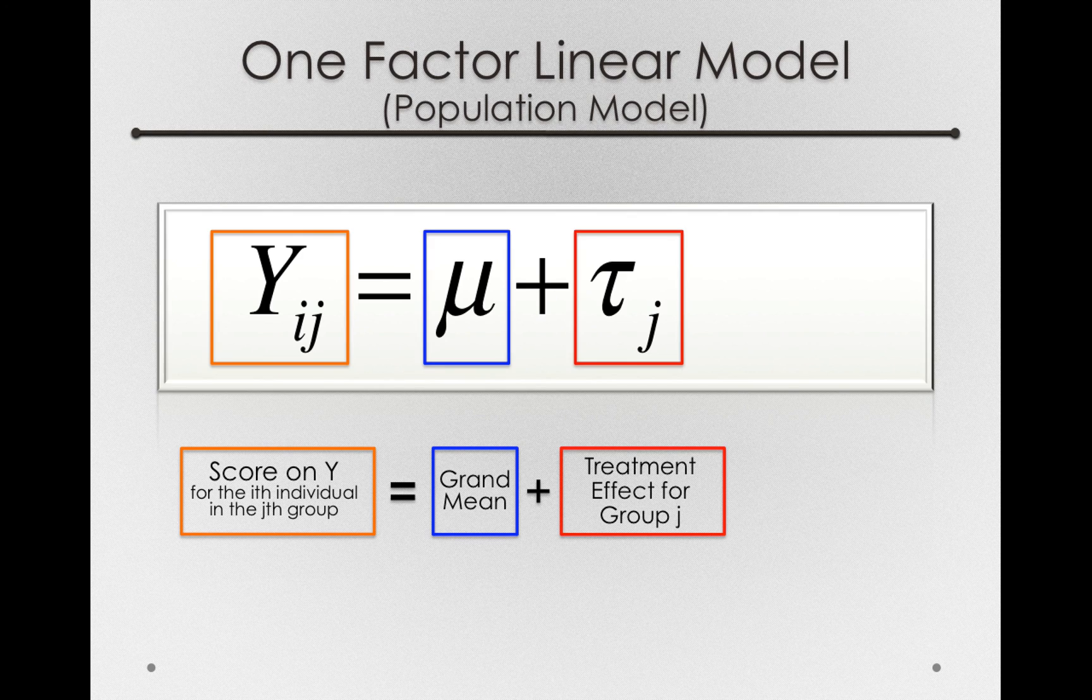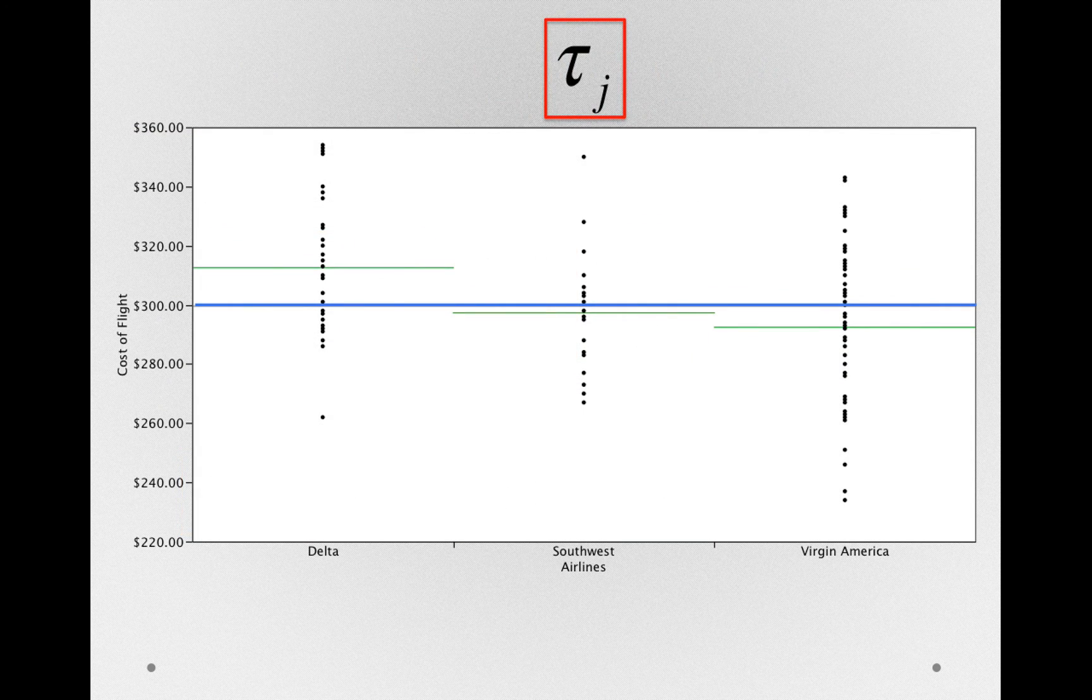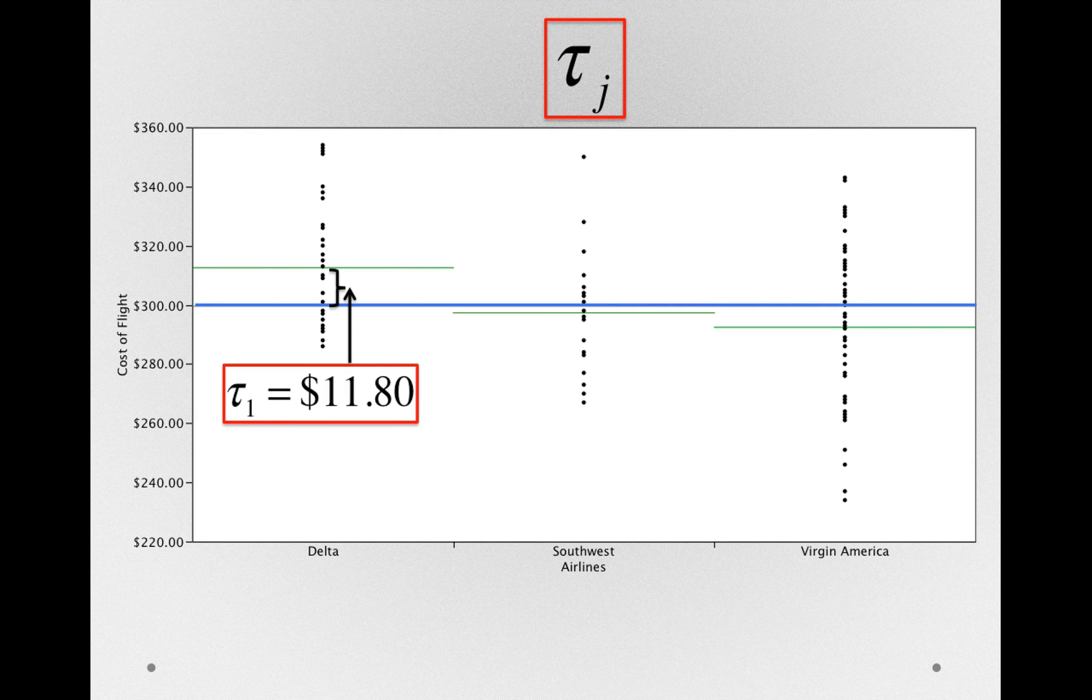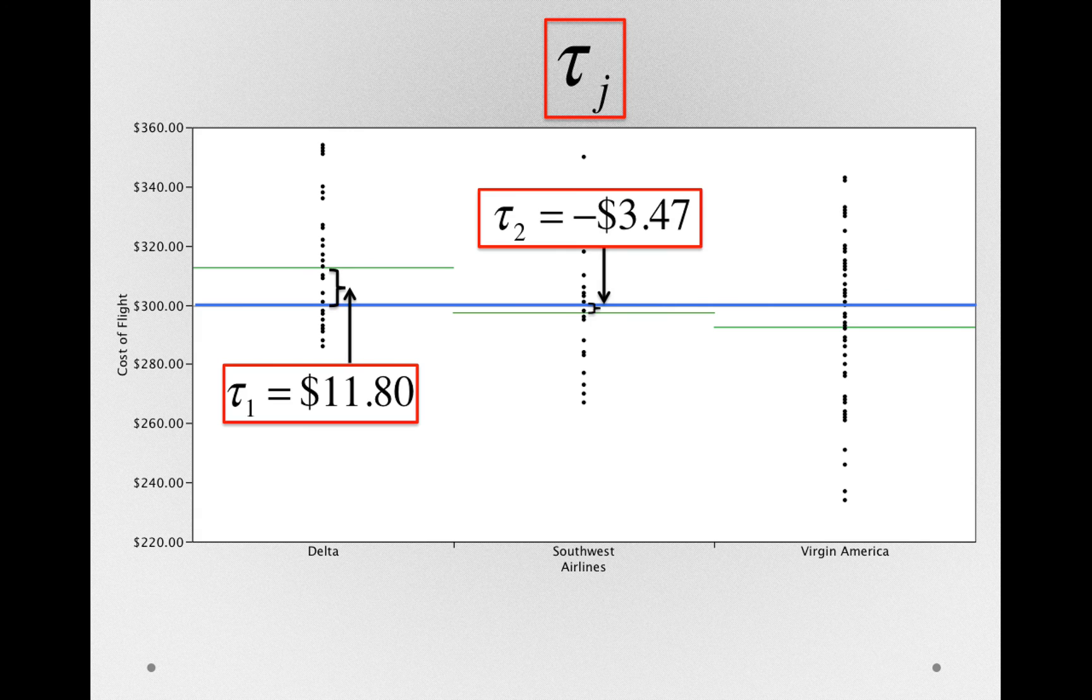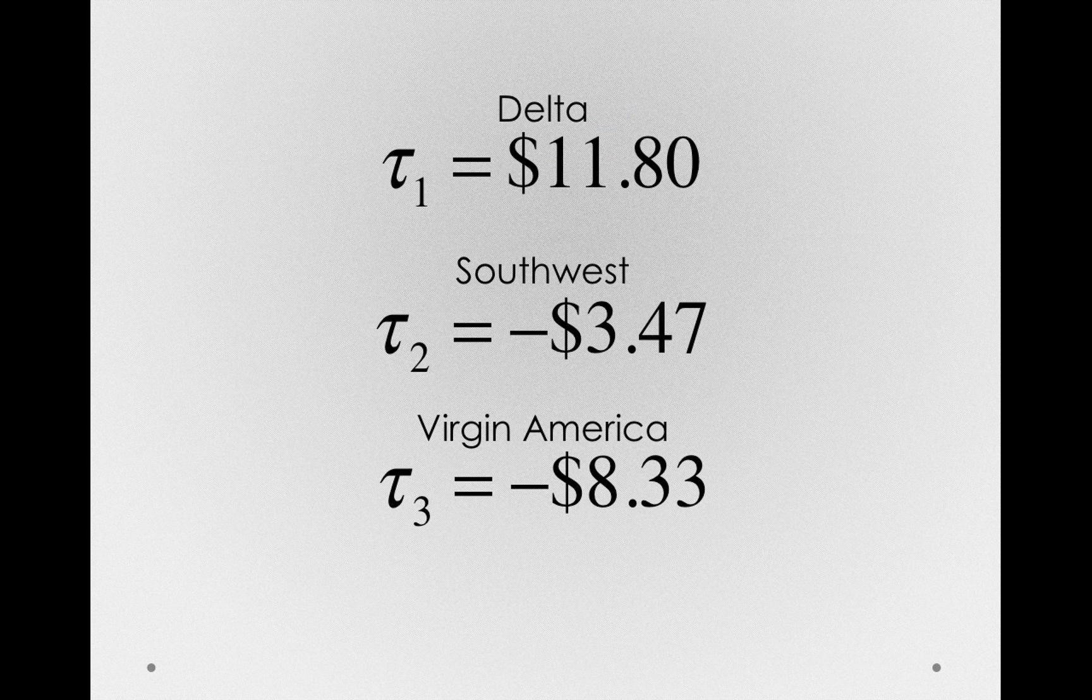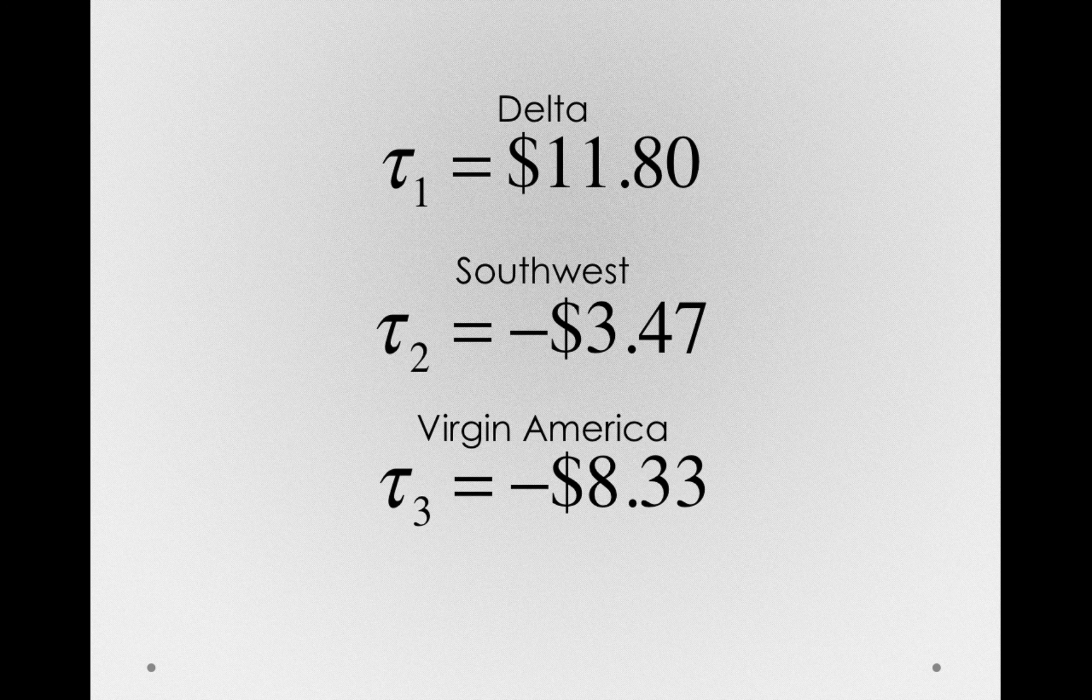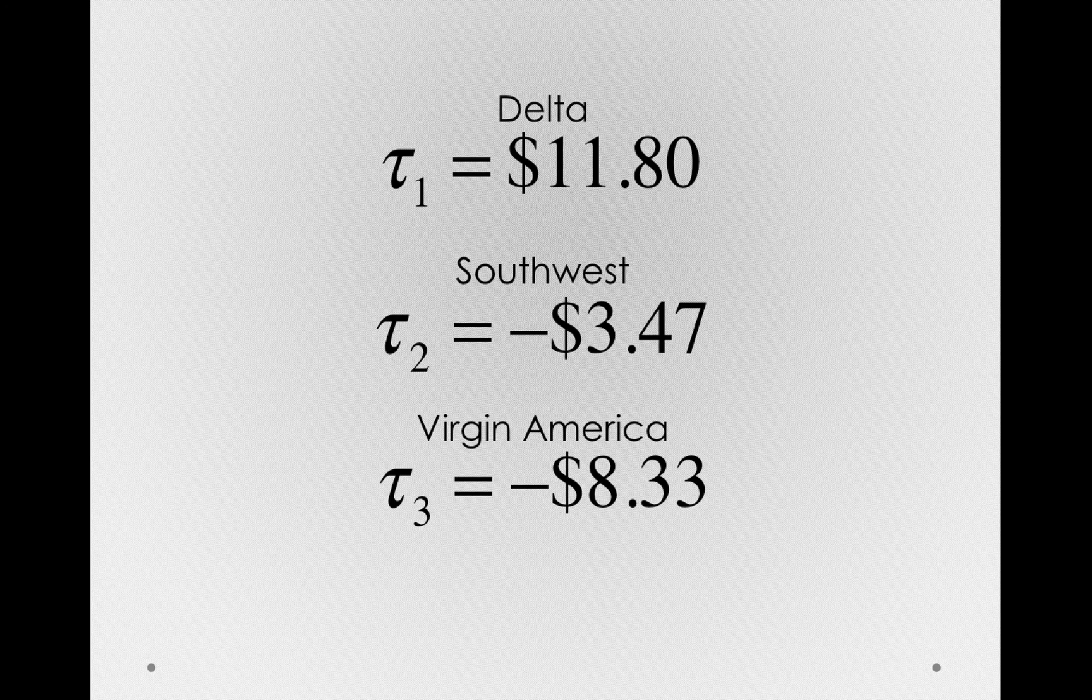Remember, these refer to those whole groups. So if I go back to our diagram, the tau_j's here is the tau_1 for delta, $11.80. The tau_2, $3.47 negative, so below the grand mean. And the tau_3, $8.33 below the grand mean for virgin. So these tau's are the offsets we saw before. They simply have a specific notation. And you can think of tau here as simply a treatment, the treatment offset for the different groups.